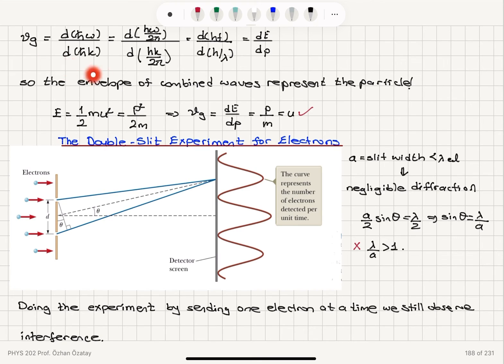And we have shown that that corresponds to dE dp. So that basically represents the speed of the particle. So the group velocity, the envelope of the combined waves represents the particle.